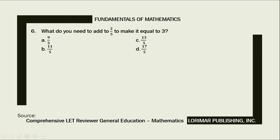What do you need to add to 2 fifths to make it equal to 3? A. 9 fifths, B. 11 fifths, C. 13 fifths, D. 17 fifths. Here is our solution. Let x equal the number to be added to 2 fifths to make it equal to 3.